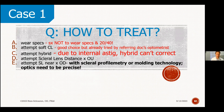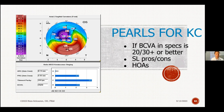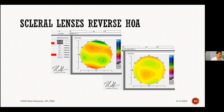A clinical pearl for primary care docs: if you're going to fit a scleral lens and the patient is 20/30 or better, think twice. Because the higher order aberrations can ruin vision — a patient with a regular cornea is already adapted to their existing HOAs, and those HOAs will be very different once you put a scleral lens on. I have a case where a 20/30 patient's vision was actually worse with a scleral lens.